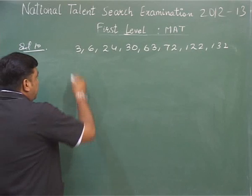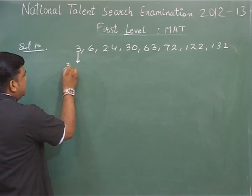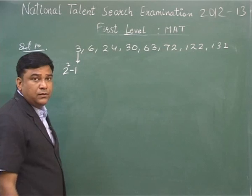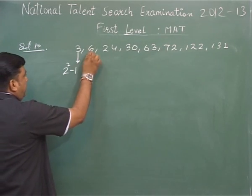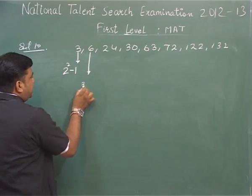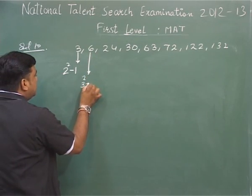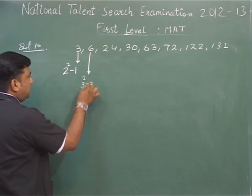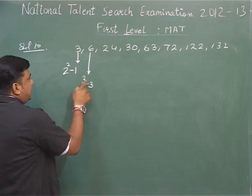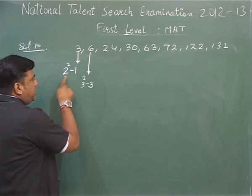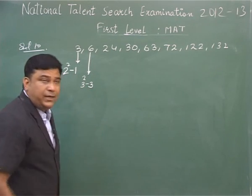We can see there is a rule — this becomes square minus 1. This is 4 minus 1 equals 3. This is 3 squared, means 9; 9 minus 3 equals 6. So what is the rule? We are getting the square of the initial number and subtracting 1, and then subtracting the number itself.